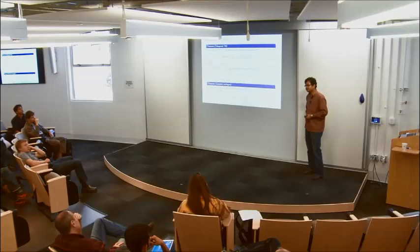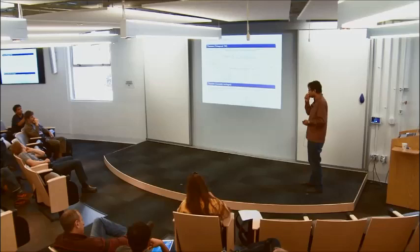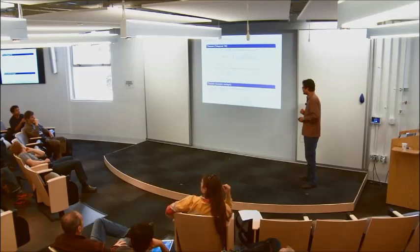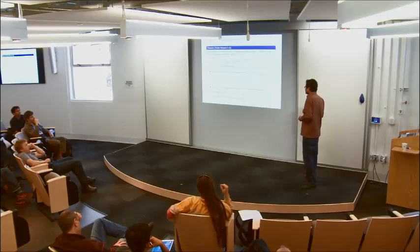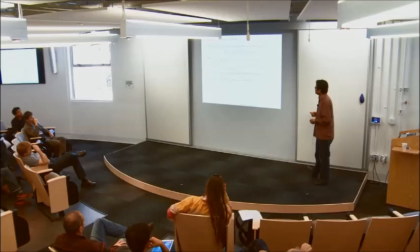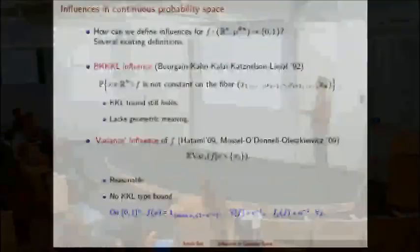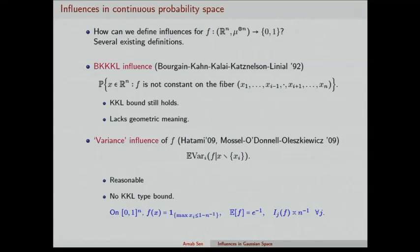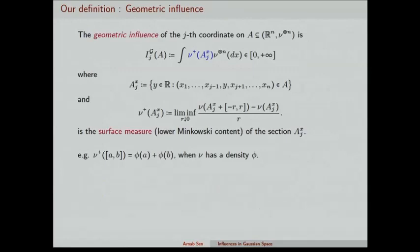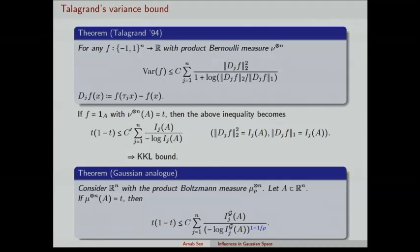The Gaussian measure is rotationally invariant, but our definition of influence does not incorporate that rotational symmetry. However, if you just integrate over all possible rotations of the set A, you should get some natural quantity. There is also a comparison with the earlier definitions: the geometric influence is bigger than the variance influence — for which the KKL-type bound does not hold — but smaller than the BKKKL-type influence. Since the BKKKL influence satisfies a log n / n bound, our definition sits in between.